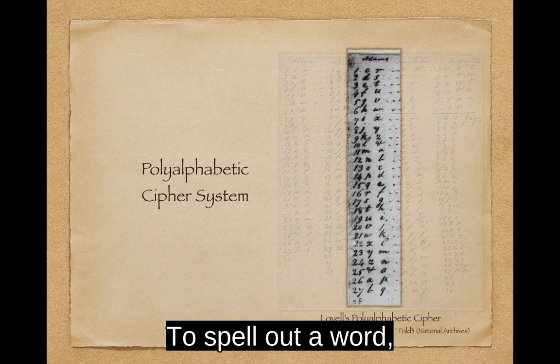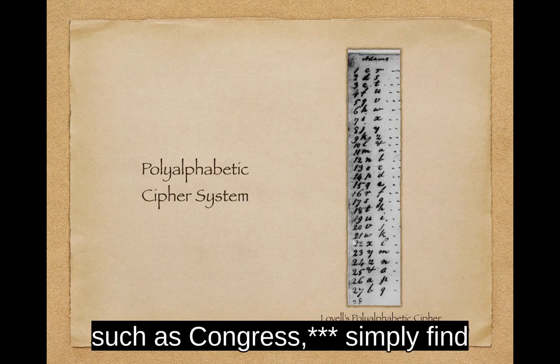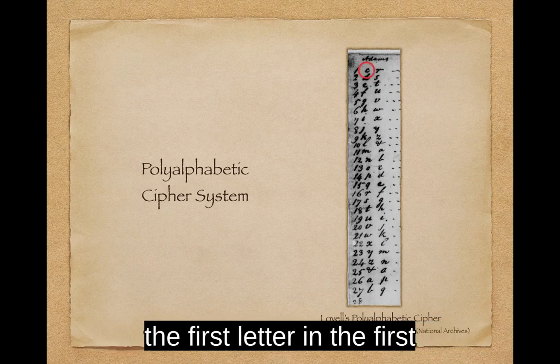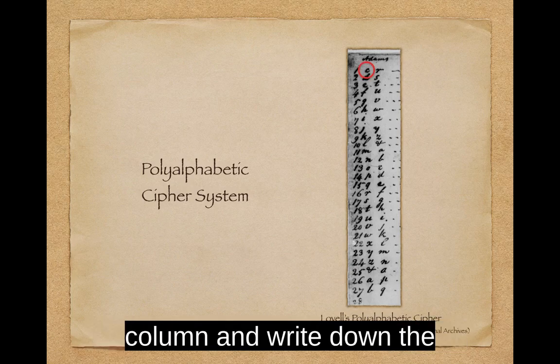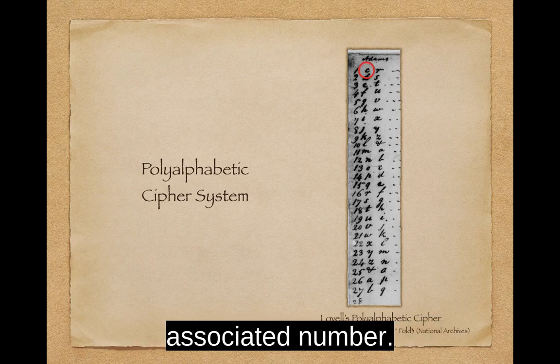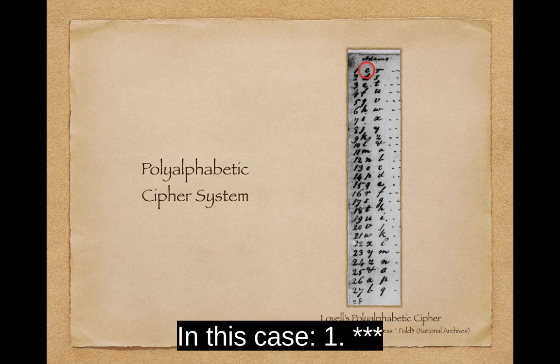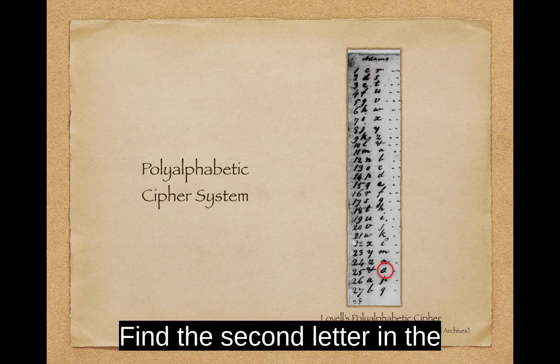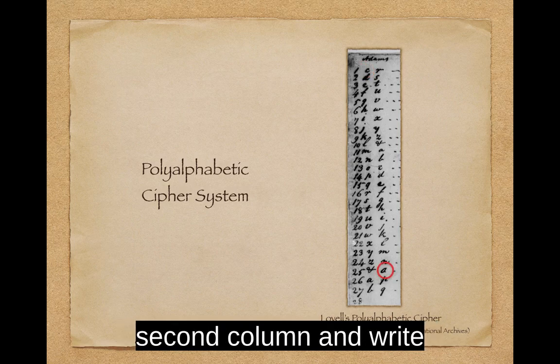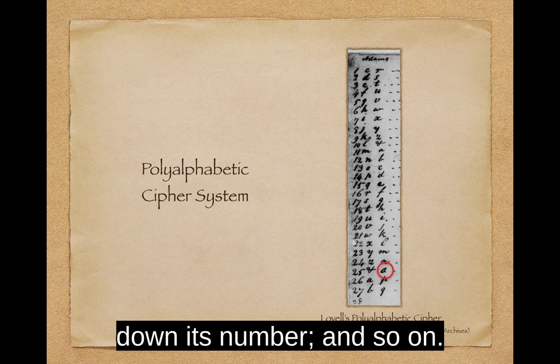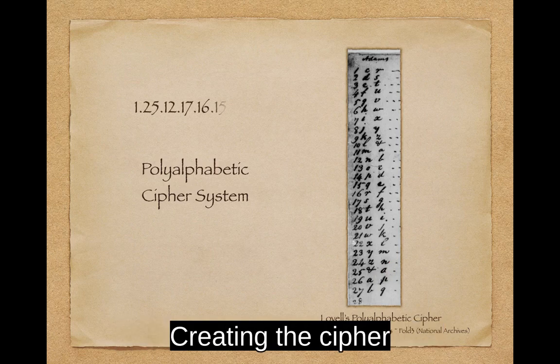To spell out a word, such as Congress, simply find the first letter in the first column and write down the associated number — in this case, 1. Find the second letter in the second column and write down its number, and so on, creating the cipher.